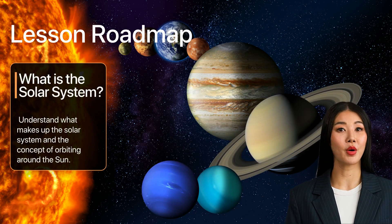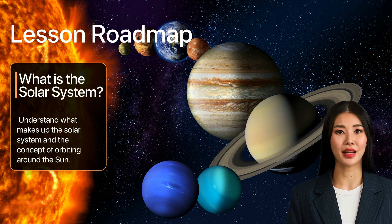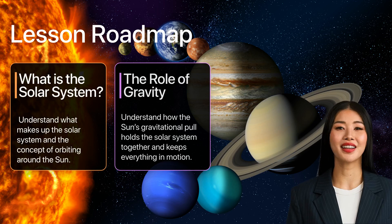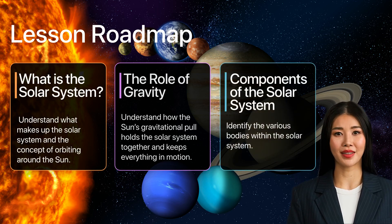Firstly, we will understand what makes up the solar system and the concept of orbiting around the Sun. Next, we will understand how the Sun's gravitational pull holds the solar system together and keeps everything in motion. Finally, we will identify the various bodies within the solar system.